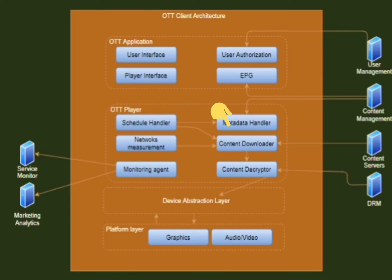The metadata handler is responsible for getting the relevant channel program metadata and stream metadata from the server. In the case of a live stream, this metadata needs to be refreshed periodically as the stream is dynamically being encoded. Channel metadata typically includes: channel time schedule, type of content (TV, live, or free), advertisement information such as ad provider and ad break details, and finally restrictions such as geo-restrictions and device restrictions.